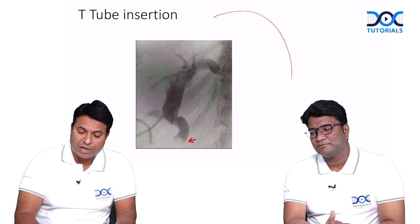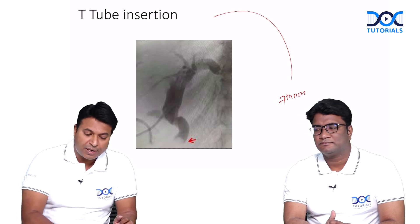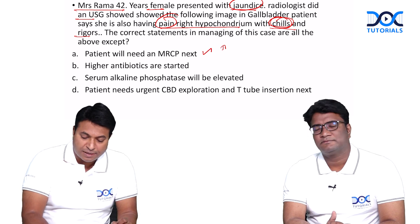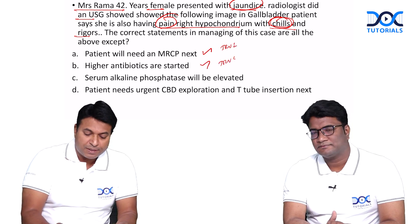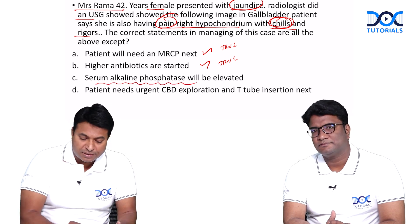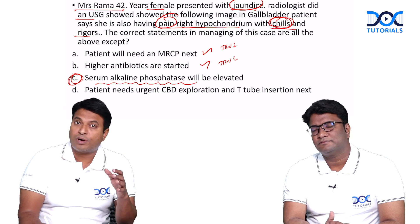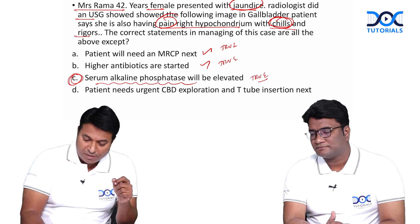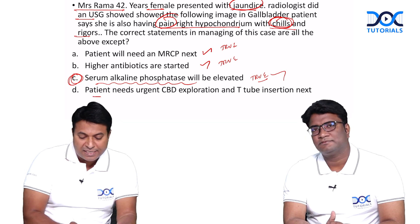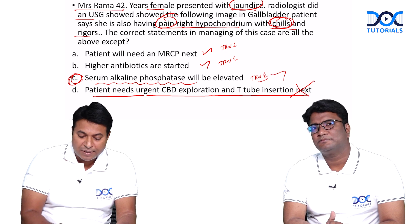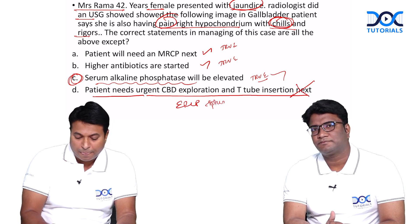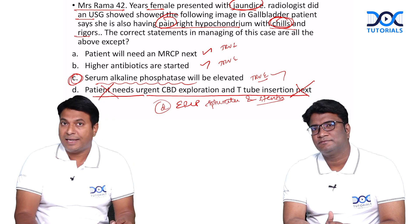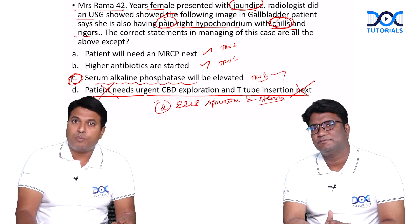Now let us come back to the question. A patient with cholangitis will need an MRCP — that is true. Higher antibiotics are needed — that is true. Serum alkaline phosphatase is elevated in any obstructive jaundice; the question mentions it to help you understand this is an obstructive jaundice, not a medical jaundice — so that is true. Patient needs urgent CBD exploration and T-tube insertion — that is wrong. The patient will need ERCP, sphincterotomy and stenting inside. That is the next step. So D is the wrong answer — the exception in this question. This is a classical integrated question on surgery and radiology.